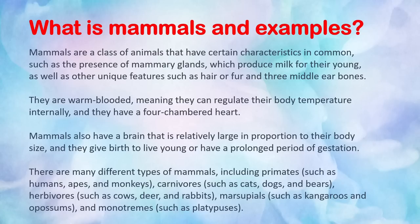What are mammals and examples? Mammals are a class of animals that have certain characteristics in common, such as the presence of mammary glands which produce milk for their young, as well as other unique features such as hair or fur and three middle ear bones.